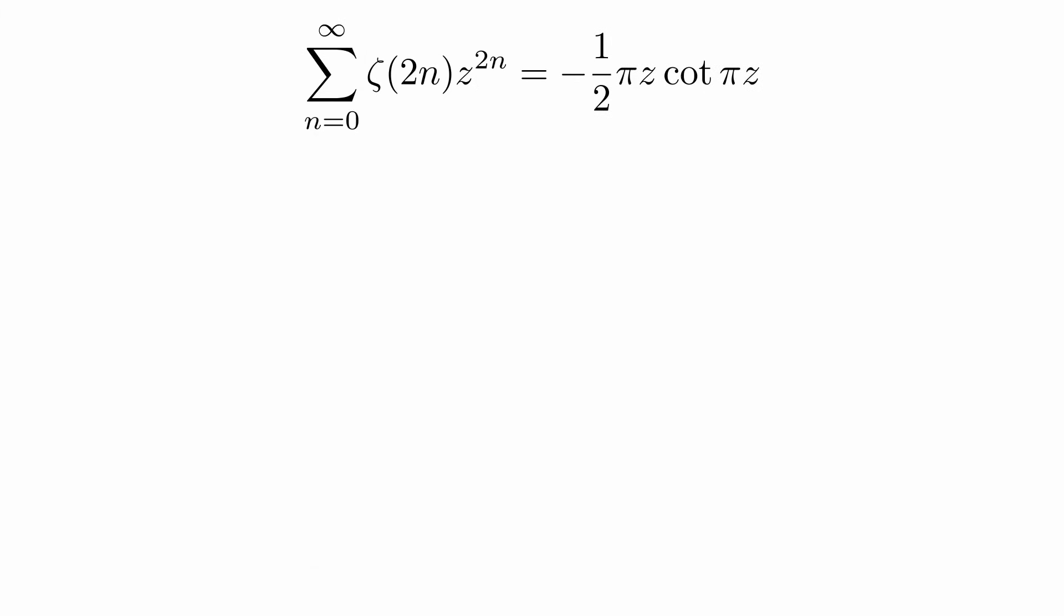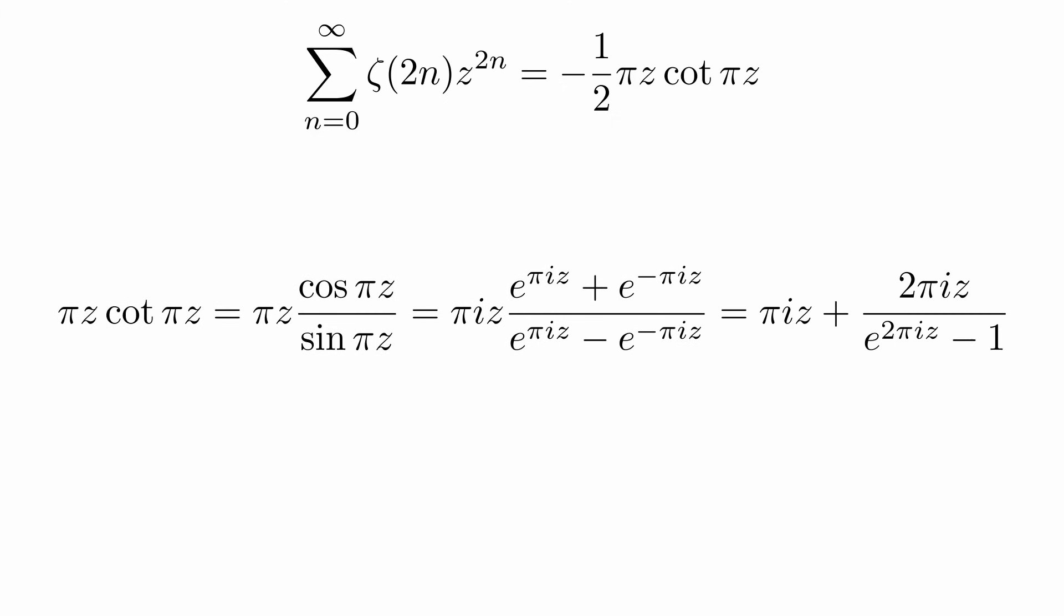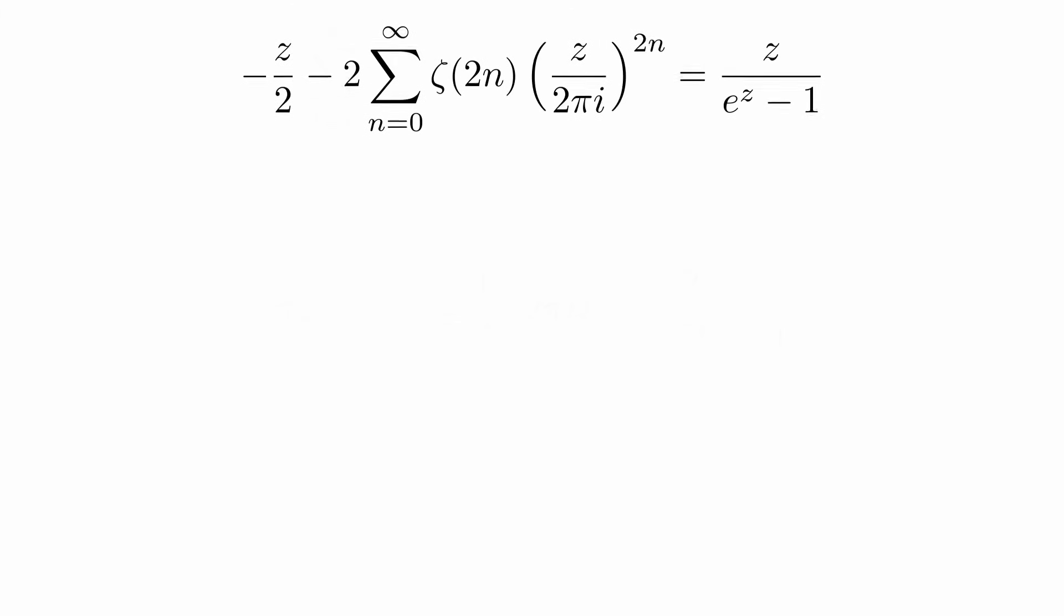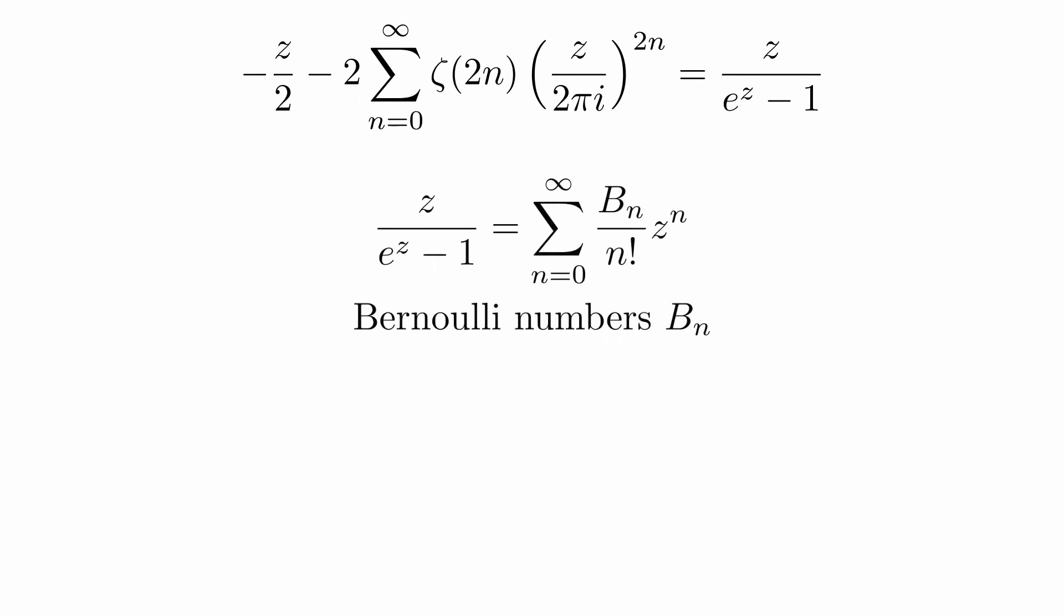So if we knew the Taylor series of z times the cotangent at the origin, we would have found the coefficients in our generating function. To find this, we can rewrite the cotangent like this. When we substitute and plug this back in, we get on the right side a very simple expression. We define the coefficients of the Taylor series at zero to be the Bernoulli numbers.